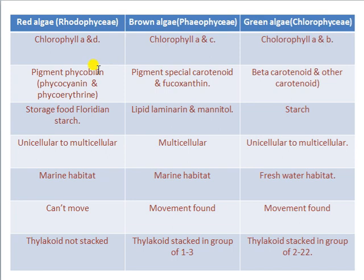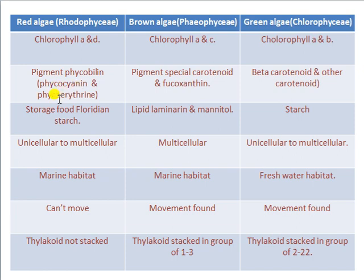Let us see the differences among these algae categories. First, the pigments: red algae contain Chlorophyll A and D; brown algae contain Chlorophyll A and C; green algae contain Chlorophyll A and B. The pigment phycobilin is present in Rhodophyceae, composed of two pigments: phycocyanin and phycoerythrin, combining to make phycobilin.